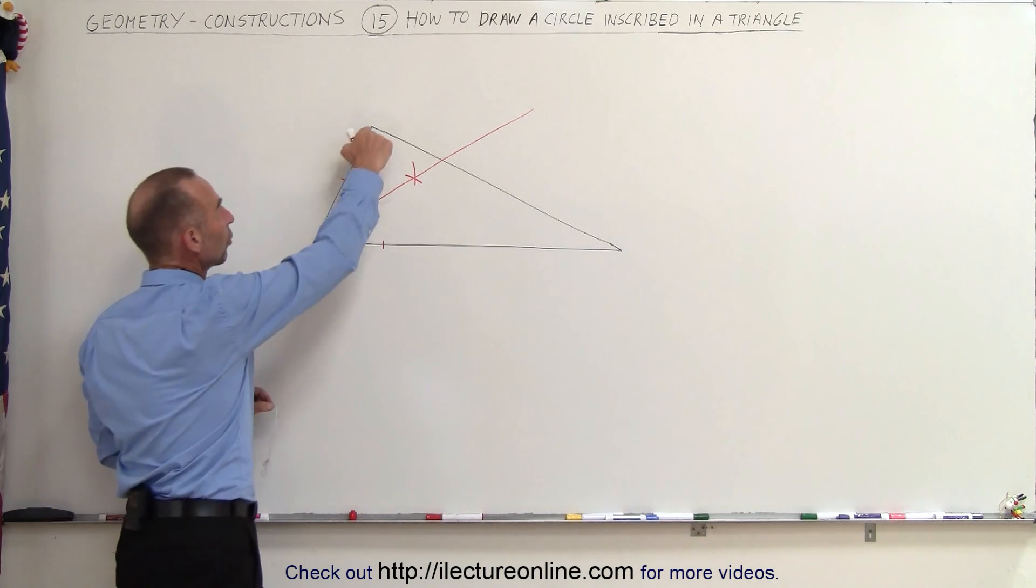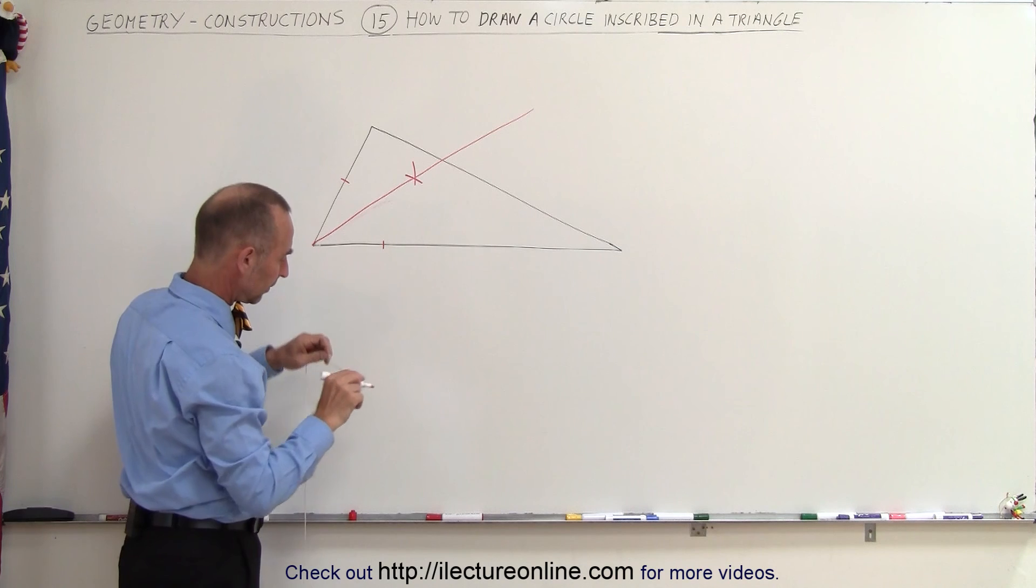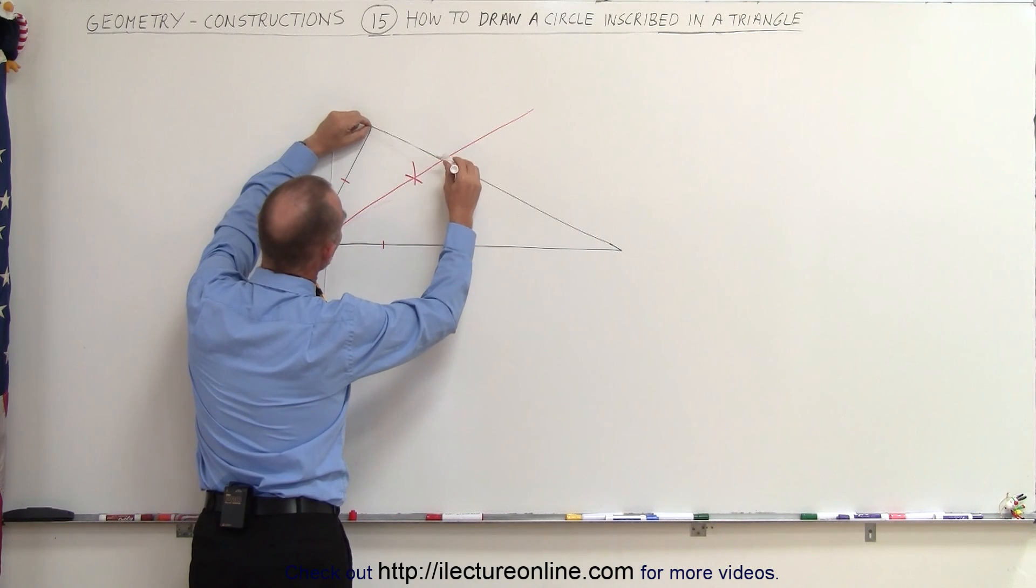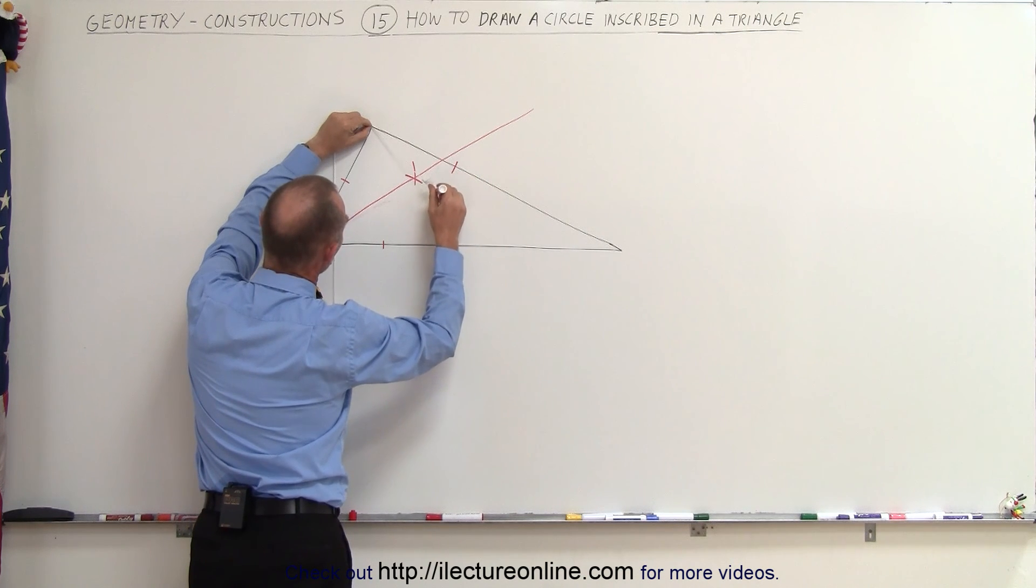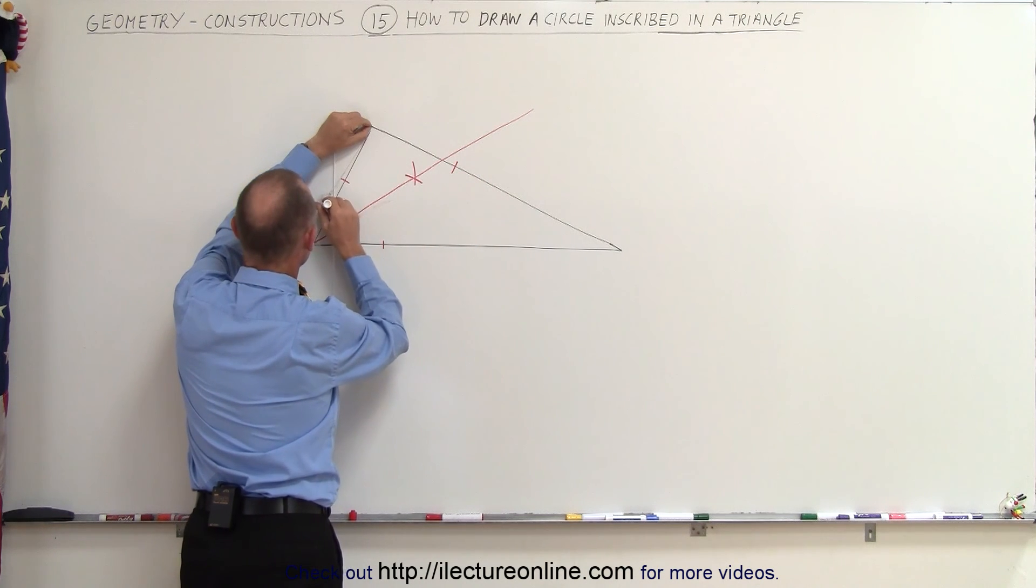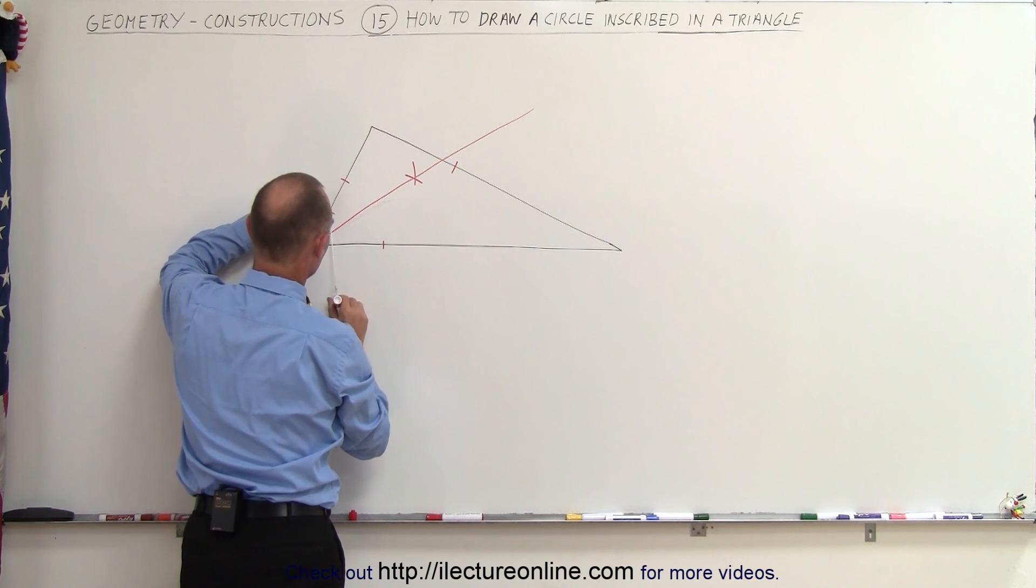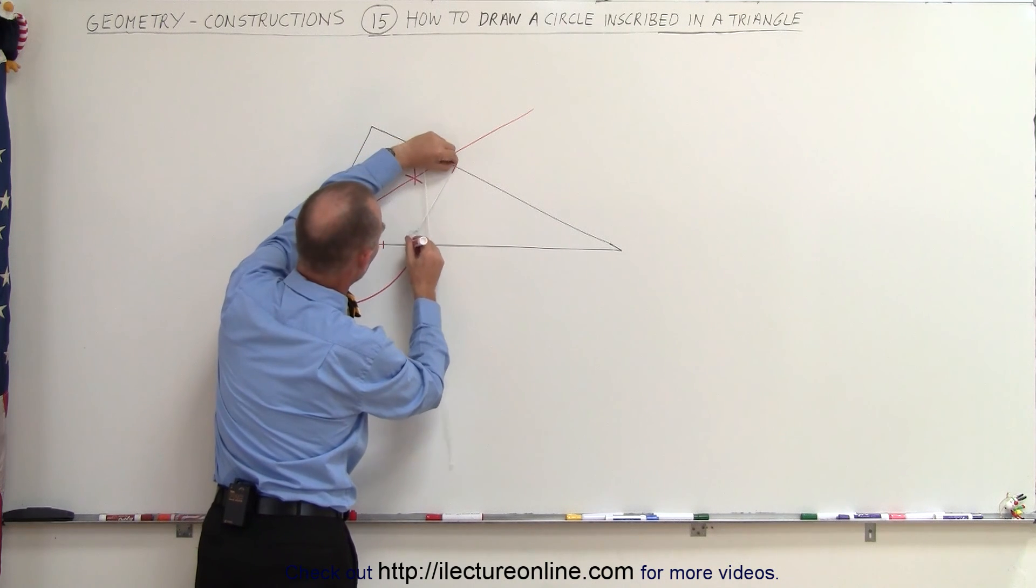I do that again with the second corner right there, so I grab my compass, and I draw a line over here, and I come over here and I draw a line this way, and I come to this point and make a little arc in this direction.